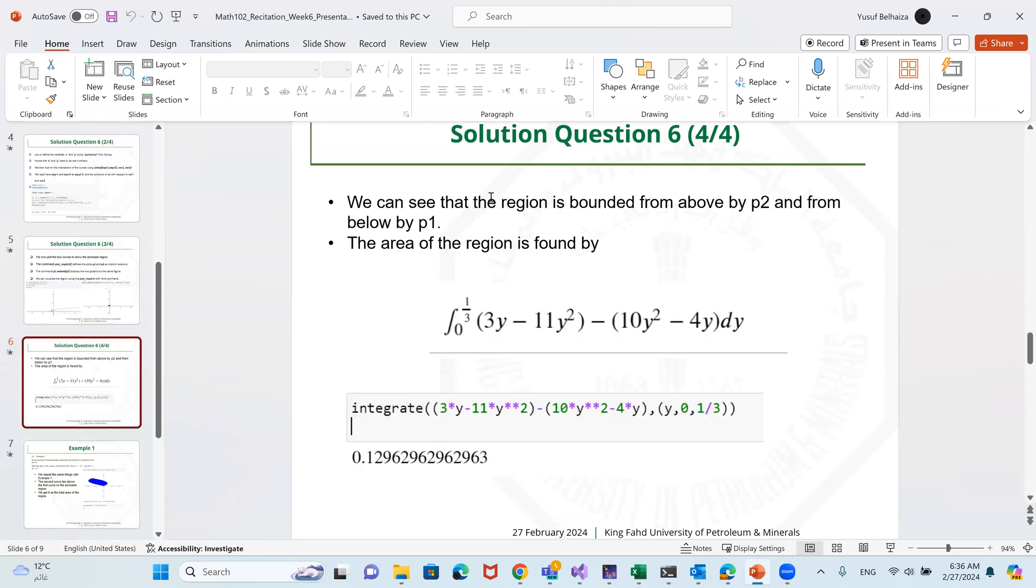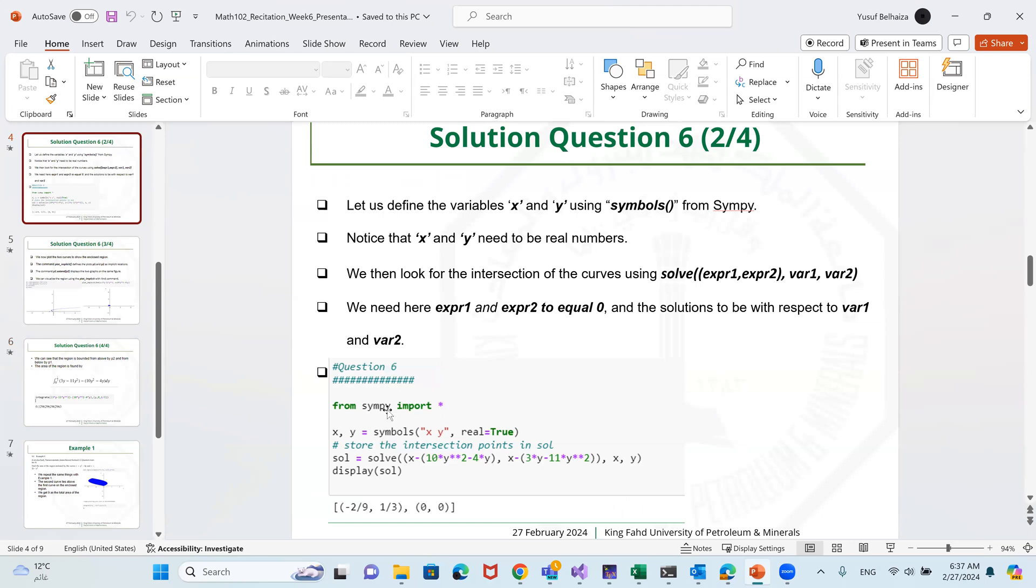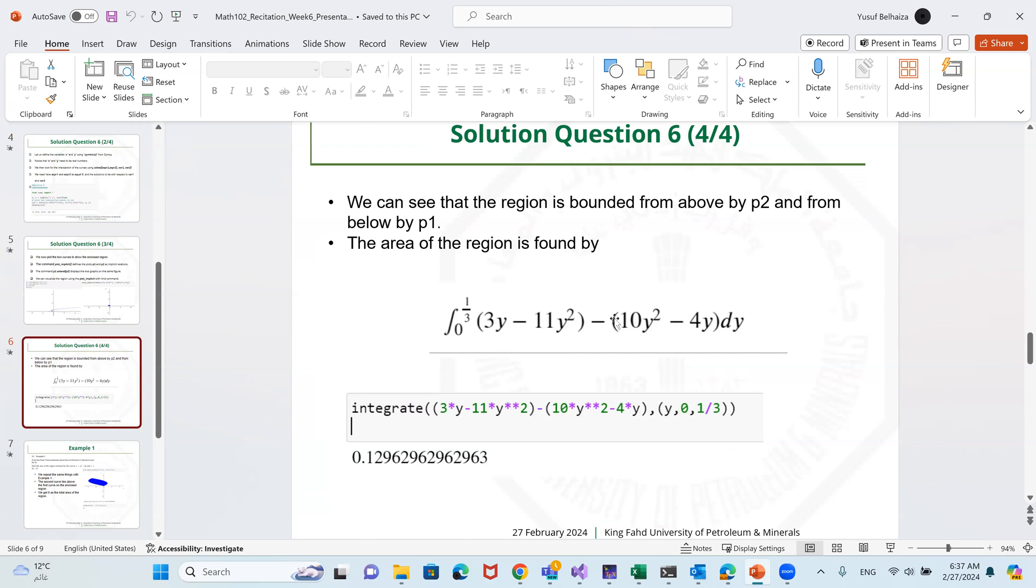Now we want the integration. We can see that the region is bound from both p2 and from p1. That's very important, so you won't have a negative area, of course. And the integration should go from 0 to 1 over 3, if you integrate with respect to y. And since we expressed x as a function of y, we will just integrate with respect to y, y going from 0 to 1 over 3. One could ask a question, why are we going from 0 to 1 over 3? Because our points of intersection, the first point the origin has y equals 0, and the second point has y equals to 1 over 3. That's why we integrate from 0 to 1 over 3 with respect to y. And of course, we will place the curve that is above first minus the curve that is below. And this way we will get the area between the two curves.